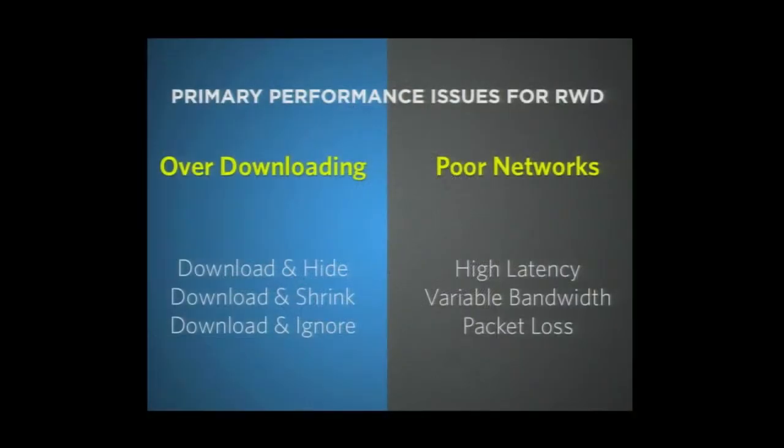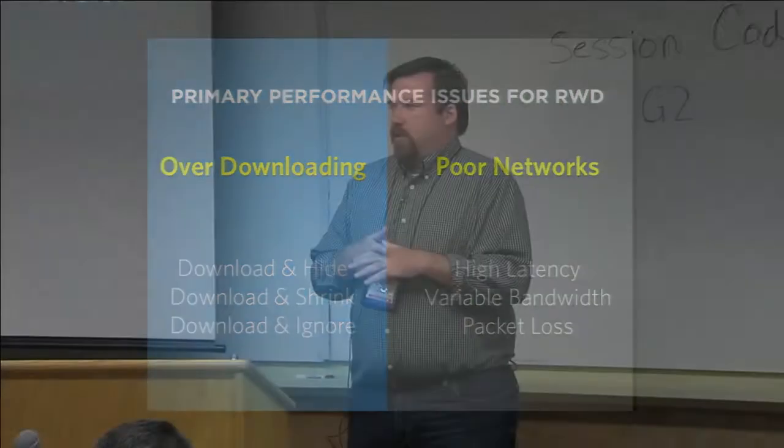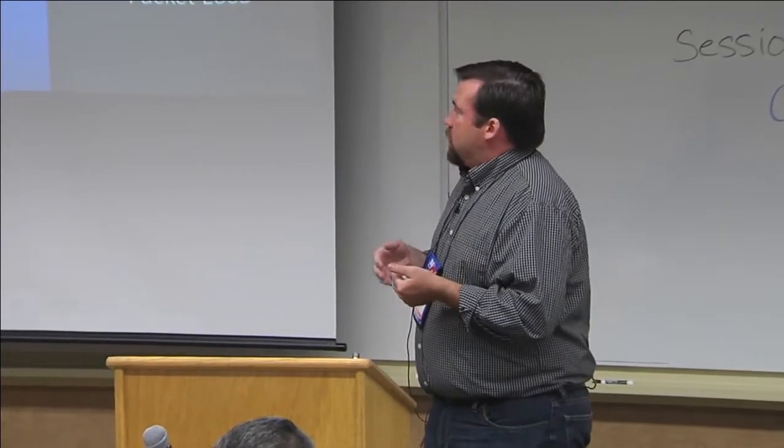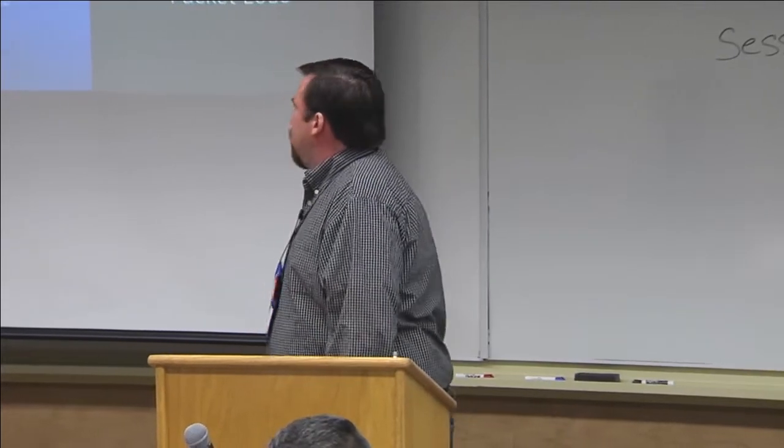There's also download and ignore, mainly a JavaScript thing, where you're delivering a JavaScript feature that's never actually used. The flip side is poor networks — high latency is the big issue on mobile. Latency is the lag between the browser sending a request to the server and the server responding. On a cable modem you probably have 40 milliseconds latency, but on Verizon's 3G or 4G network you're looking at 200 milliseconds for a single request. That starts stacking up the more requests you have on a page — 80 or 90 requests and you're losing a ton of time.